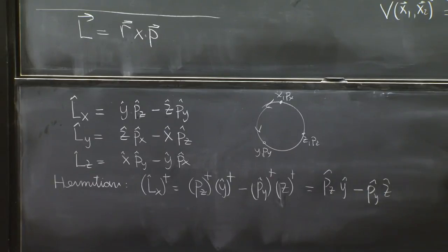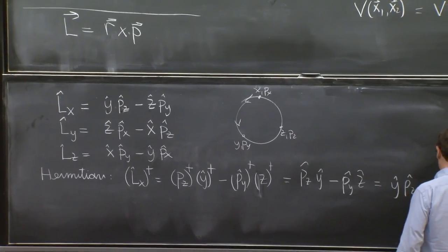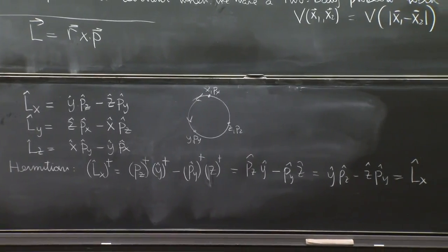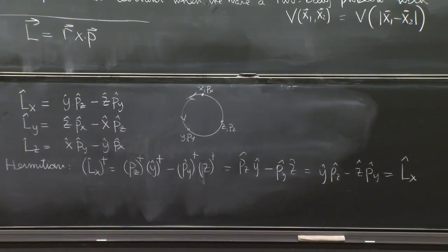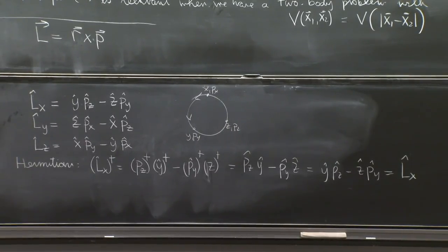And we use, again, that y and pz commute, and z and py commute, to put it back in the standard form. And that's, again, Lx. So it is a Hermitian operator. And so is Ly and Lz. That means these operators are observables. That's all you need for the operator to be an observable. And that's a very good thing. So these operators are observables.